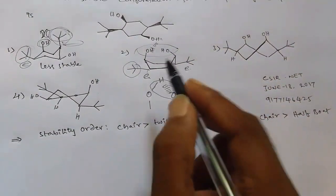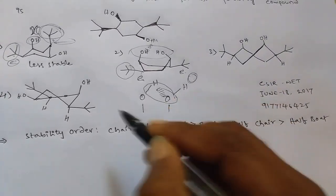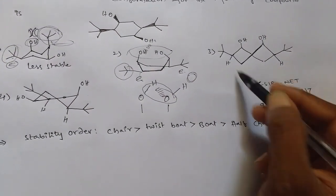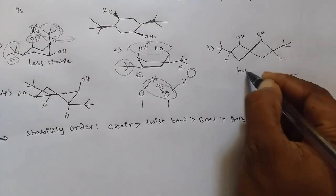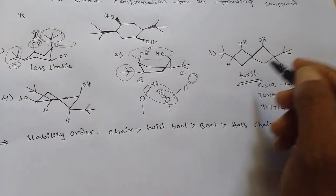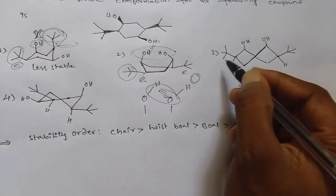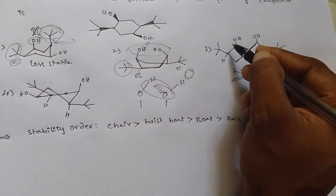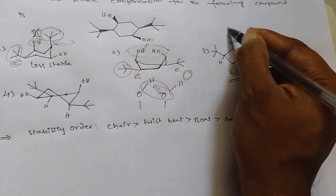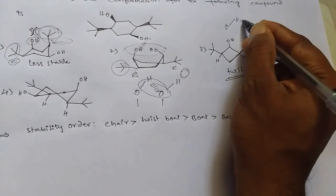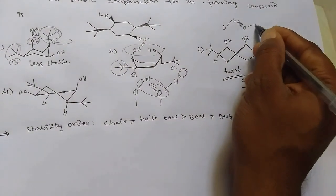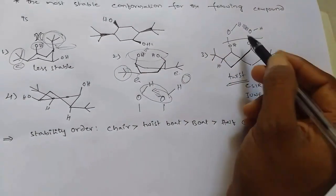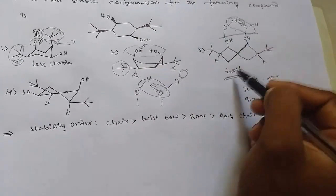The third option is the twisted boat structure. In this twisted boat, the bulky groups are in equatorial positions and are far away from each other. If you observe the OH groups, there is also a chance of hydrogen bonding present here. So this conformation also has a chance for good stability.